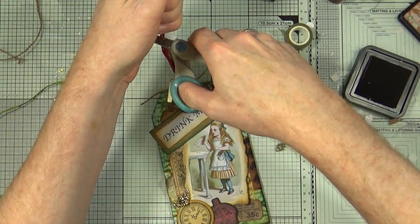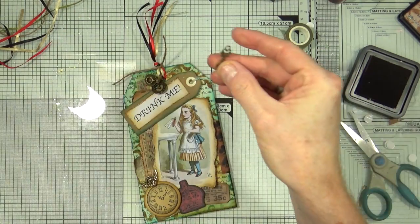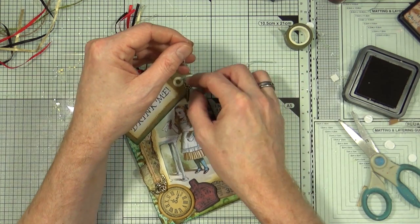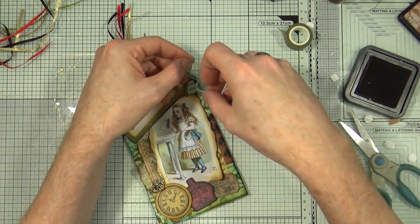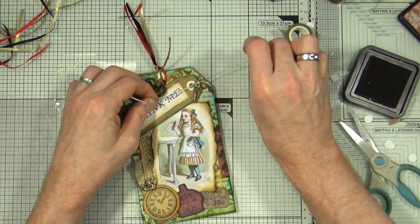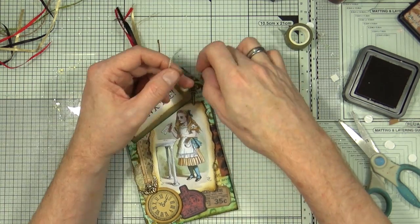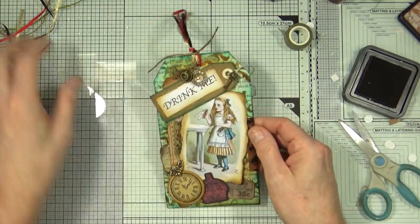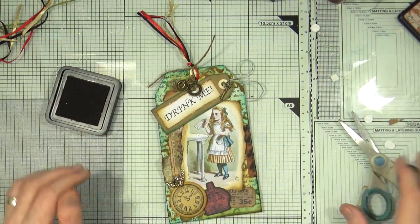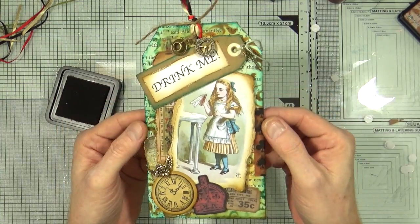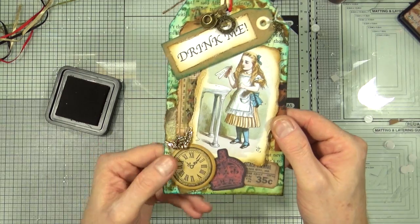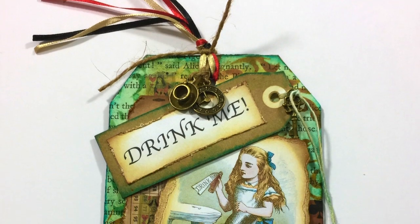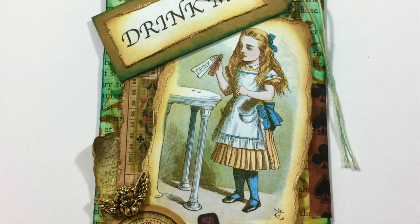I'm just trimming off to make sure that all the ribbons and fibers are all the same length, and then I can add the final touch of the key to the drink me tag and then I'm going to call this tag complete.